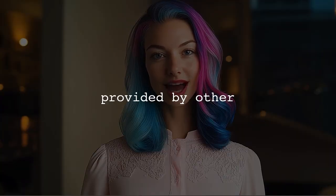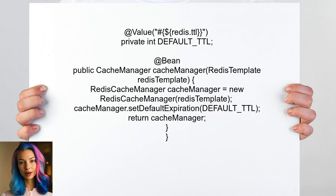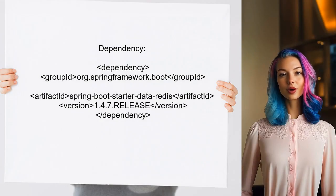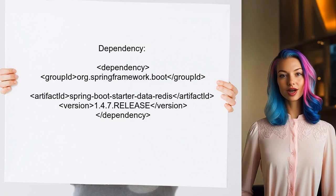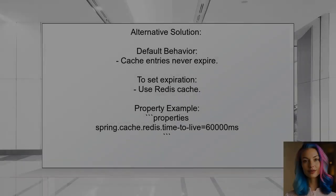Now let's look at the answers provided by other users. One alternative approach involves extending the cache manager to define the default time-to-live. They provide a code example showing how to configure a Redis cache manager with a specified TTL, and mention the necessary dependency — the Spring Boot Starter Data Redis package. According to another user, the default behavior of the @Cacheable annotation is that cache entries never expire. To set an expiration time, they recommend using Redis cache with a specific property — for example, setting the time-to-live to 60,000 milliseconds to make the cache expire after one minute.